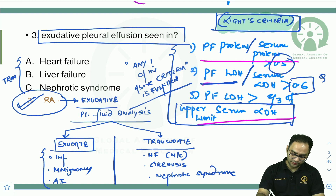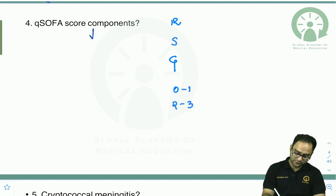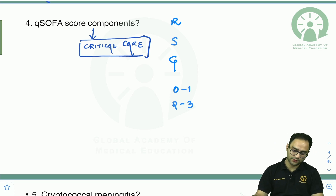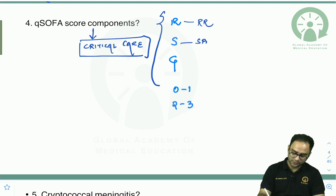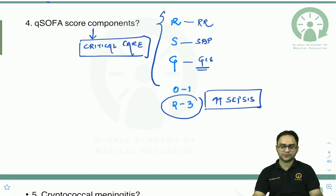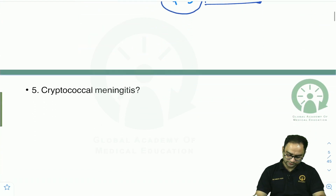What you need to remember is Light's criteria. Next, a repeatedly asked critical care question: what are the components of qSOFA score? qSOFA has three components: respiratory rate, systolic blood pressure, and GCS. A score of 2 to 3 indicates a high chance the patient is developing sepsis. qSOFA score components are regularly asked in the exam.